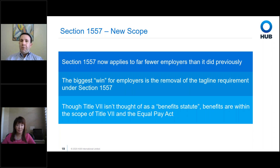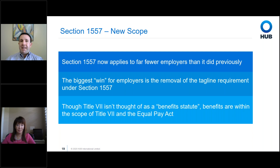We need to tie Section 1557 back to Title VII. Even though Title VII isn't thought of as a traditional benefit-specific statute, benefits are certainly within its scope along with the Equal Pay Act. We can't look at 1557 in a vacuum — it needs to be examined in relation to Title VII as well, because they can't be looked at individually.